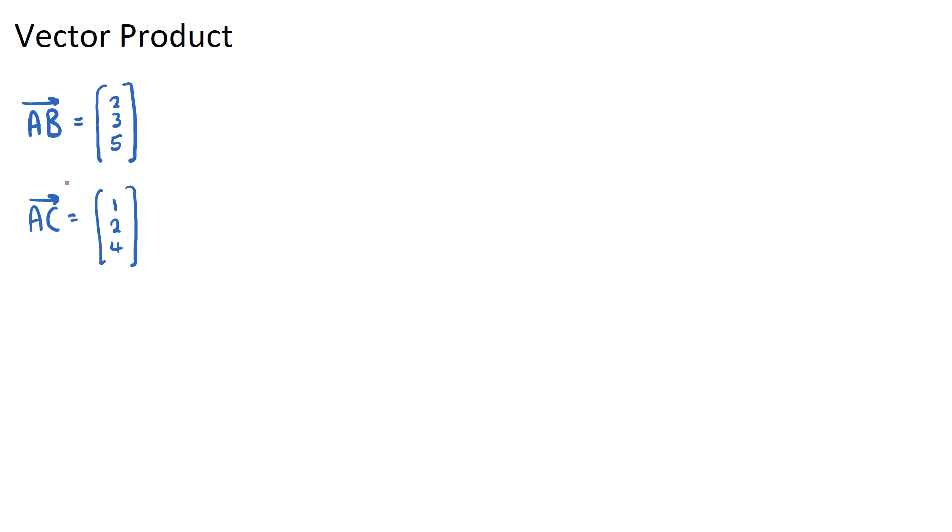So I've given you two vectors here, AB and AC. If I want to find the vector product, you may also see this as the cross product. These are the two ways you might see it, vector product and cross product, they do mean the same thing.